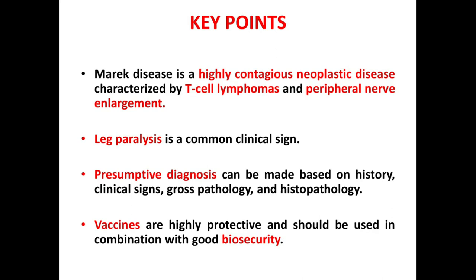Now let's go through the key points once again. Marek's disease is a highly contagious neoplastic disease characterized by T cell lymphomas and peripheral nerve enlargement. Leg paralysis is a common clinical sign, and a presumptive diagnosis can be made based on history, clinical signs, gross pathology, and histopathology.